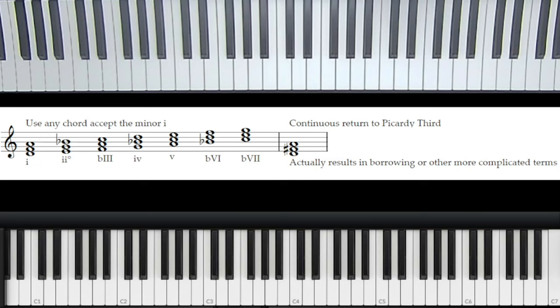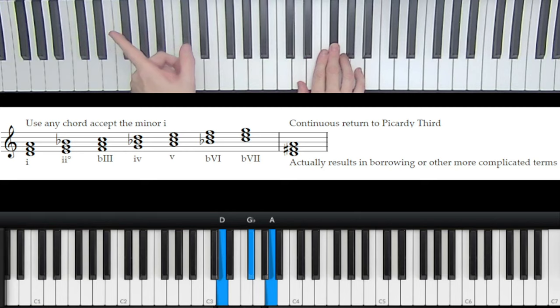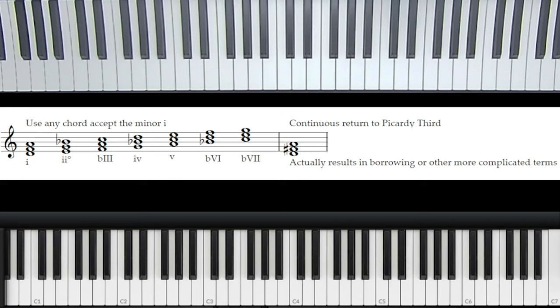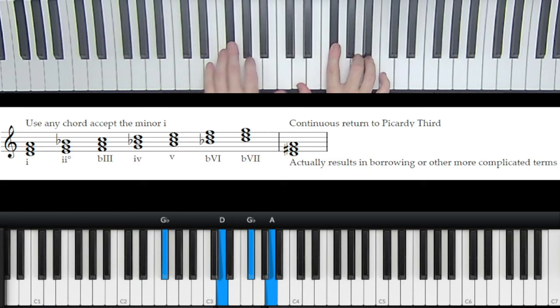Well, this is actually a form called borrowing, often called borrowing or in more complicated terms, sometimes people use the terms negative harmony or modal interchange, but it all results in the same thing. So we're just going to land on the Picardy third, and the rest of the chords we're going to use as minor.